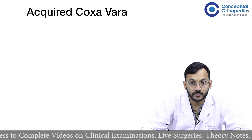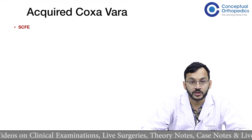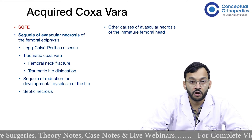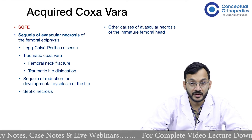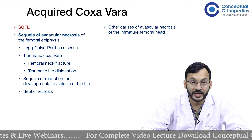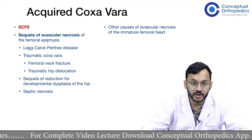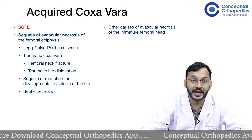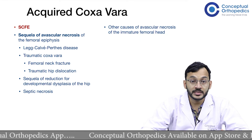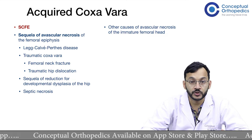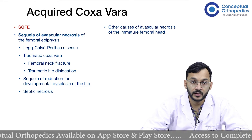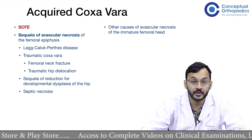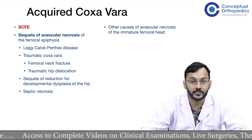Turning to the causes of acquired coxa vera: the most common cause is SCFE. Other causes include sequelae of avascular necrosis of the femoral epiphysis, which can result from Perthes disease, traumatic coxa vera causing a femoral neck fracture or traumatic hip dislocation, forcible reduction of DDH leading to AVN, and septic necrosis of the femoral head or septic arthritis sequelae.